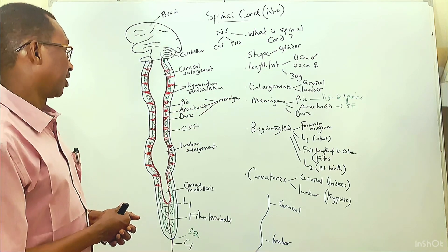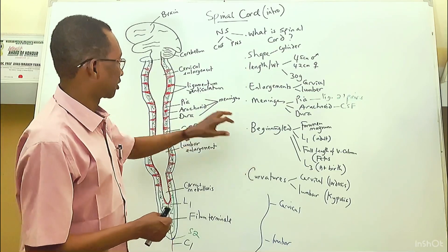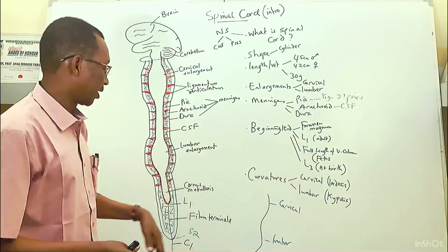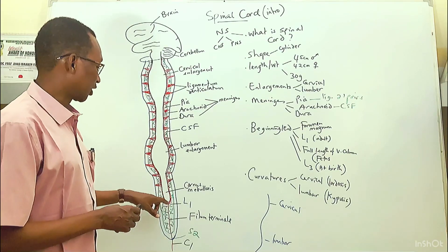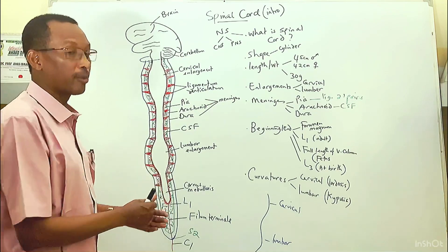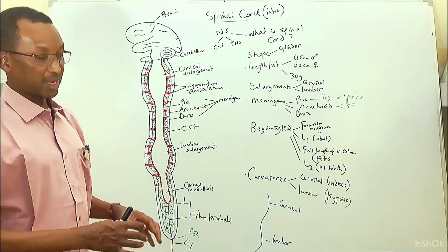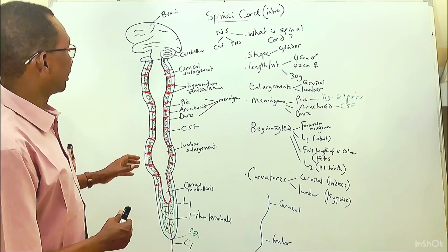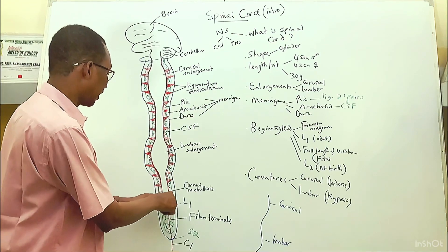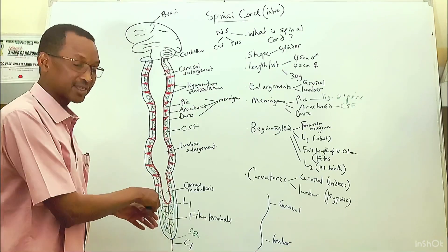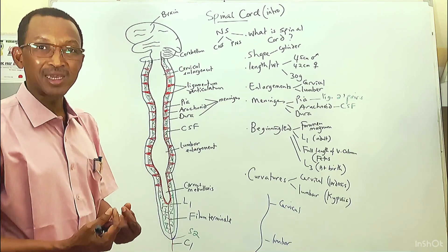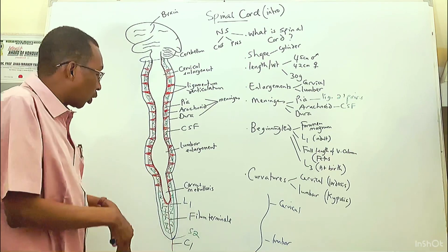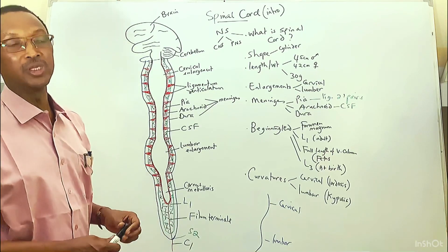The spinal cord begins from the foramen magnum and ends at the level of L1 — the first lumbar vertebral body. It terminates in a cone-like structure known as the conus medullaris. The pia mater ends at exactly the level of L1 where the spinal cord ends, but it continues downward as a thin filament-like structure known as the filum terminale, which is a hair-like filament that goes beyond the level of L1.